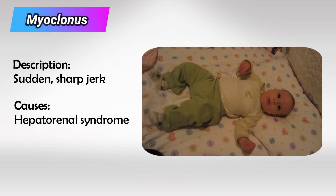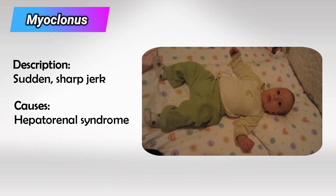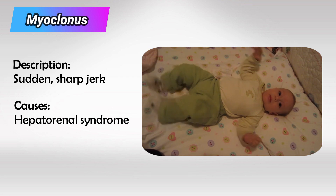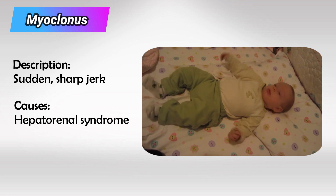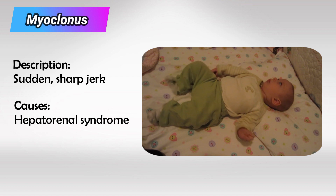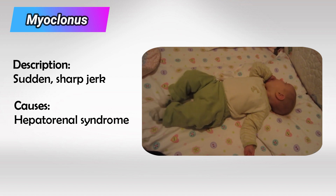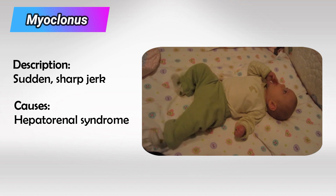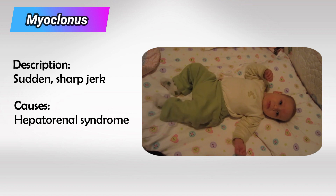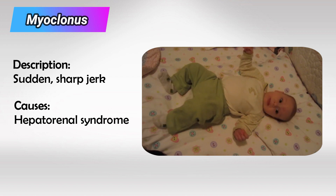Next we have myoclonus, and this is a sharp, sudden, weak movement. It's almost like a shock or a sudden vibration of any muscle, and this can present as hiccups. We see this in hepatorenal syndrome.